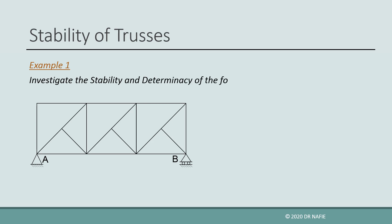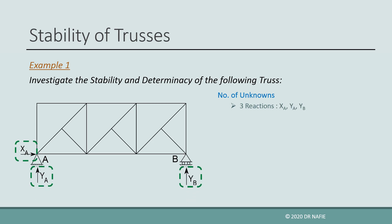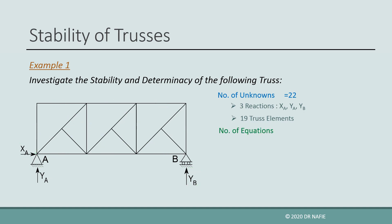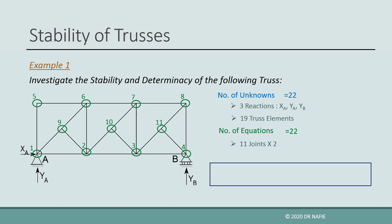Now, let us look at the first example. The shown truss has a hinged support with two reactions and a roller support with one reaction, so the total number of reactions is 3. The number of truss elements is 19. So the total number of unknowns is 3 plus 19, which equals 22. The total number of joints is 11, giving 11 multiplied by 2, which equals 22 equilibrium equations. Because the number of equilibrium equations equals the number of unknowns, the truss is stable and determinate.